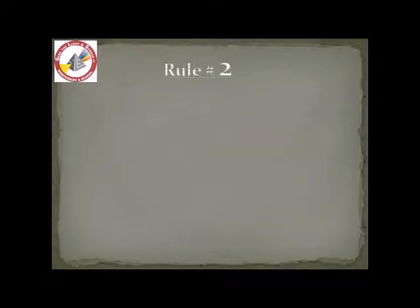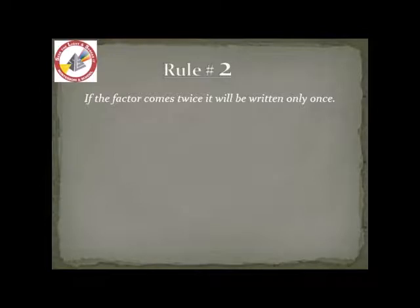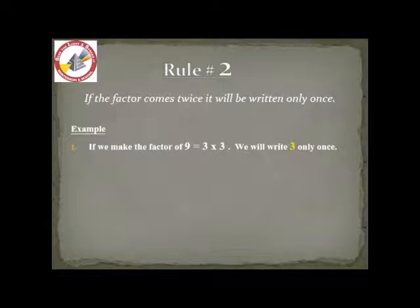Now, the rule number 2 is, if the factor comes twice, it will be written only once. For example, if we make the factor of 9, 3 times 3 is 9, we will write 3 only once. Similarly,